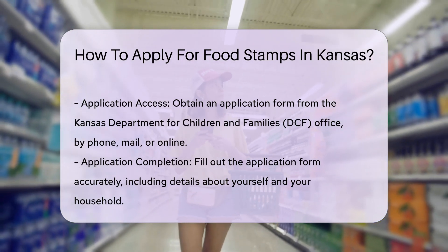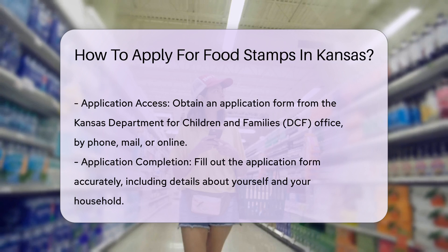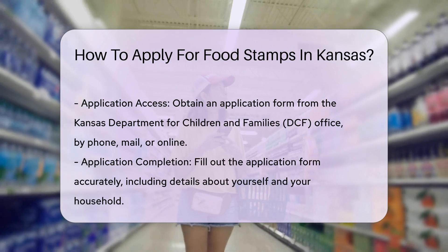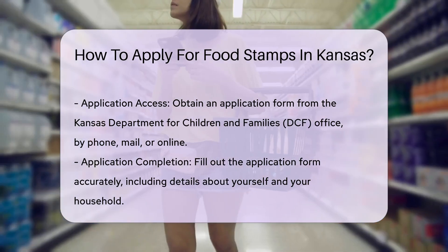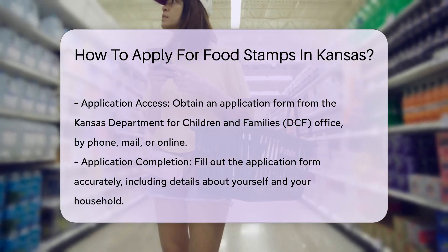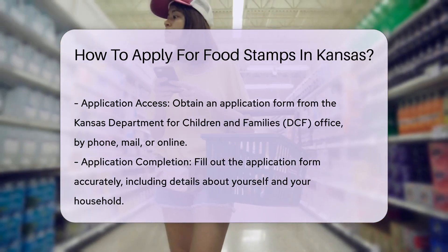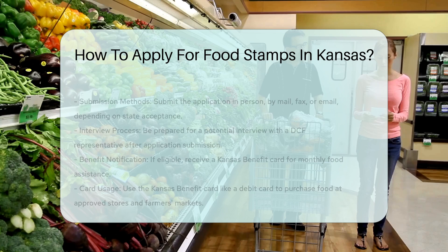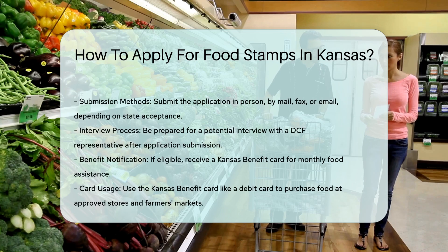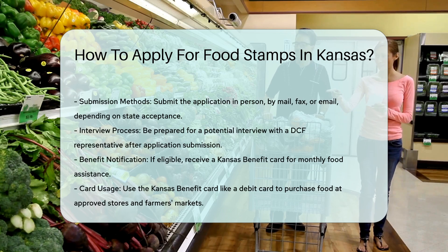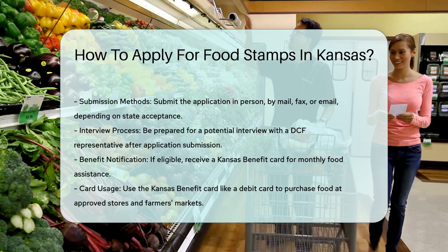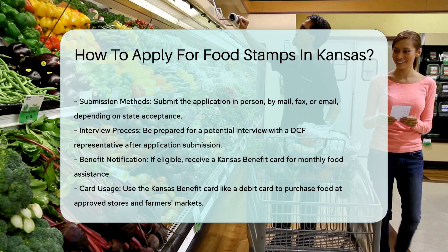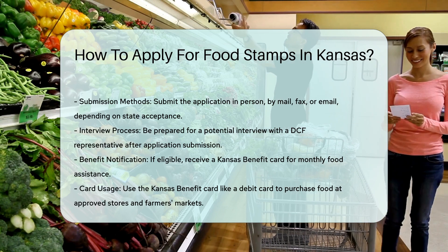Step 5: Submit the application. You can submit the application in various ways: take it to the DCF office in person, send it by mail, fax it if your state accepts faxed applications, or email it if your state accepts emailed applications.